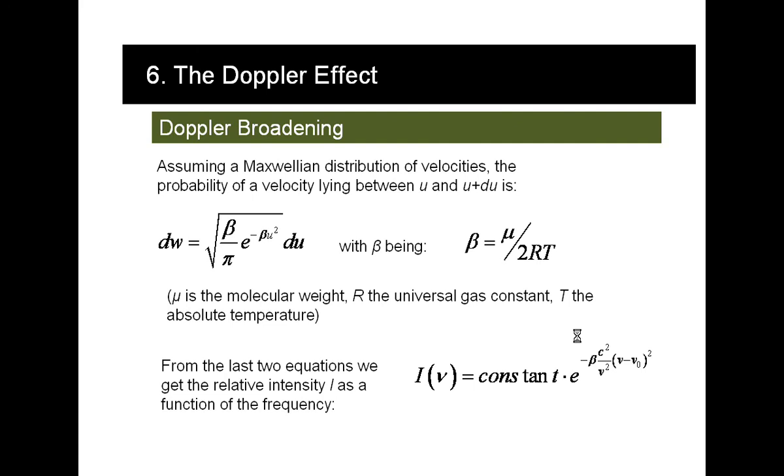And now if we combine these two formulas, the one about the probability of the velocity and the one about the difference of frequencies, we derive this very useful formula which gives us the relative intensity of a spectral line as a function of the frequency.